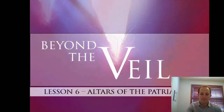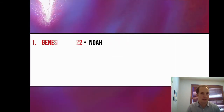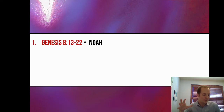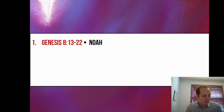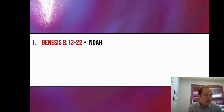We're going to start in Genesis chapter 8, looking at our first example of Noah. Once the ark comes to rest and the waters have subsided, Genesis chapter 8 verse 13 says: 'It came about in the 601st year, in the first month, on the first of the month, the water was dried up from the earth. Then Noah removed the covering of the ark and looked, and behold, the surface of the ground was dried up. And in the second month, on the 27th day of the month, the earth was dried.'